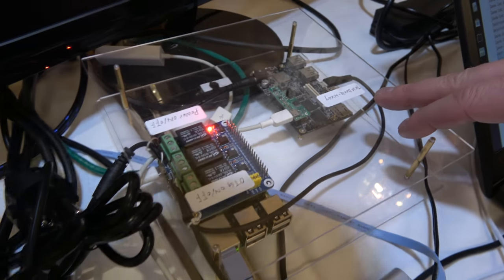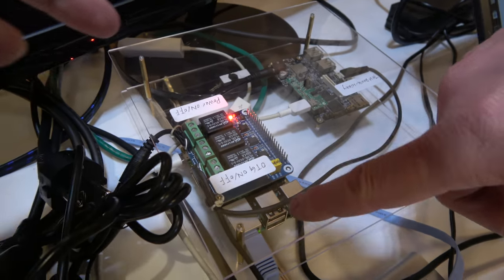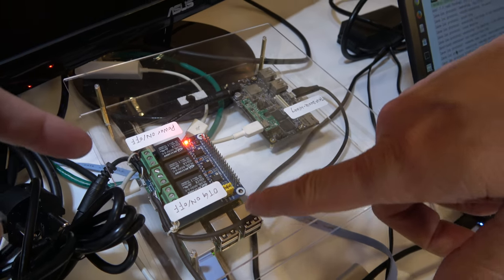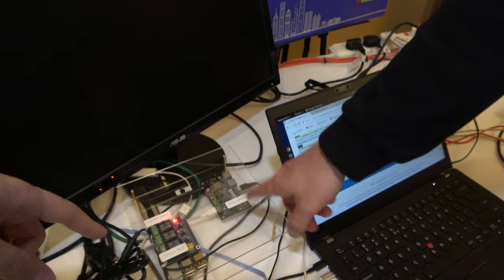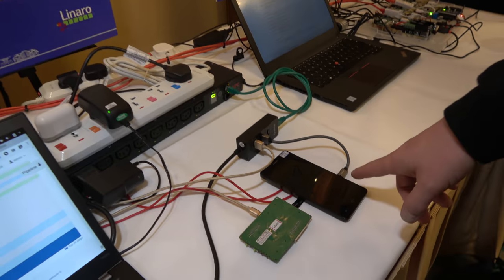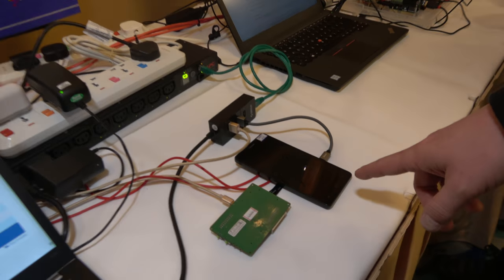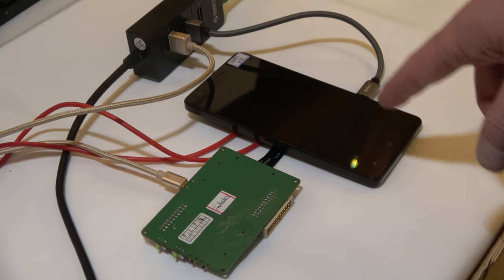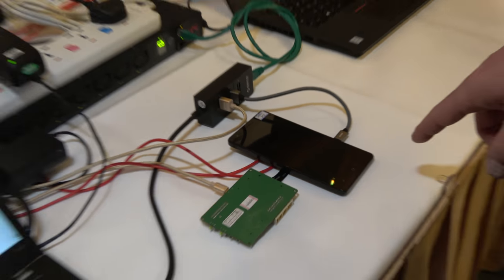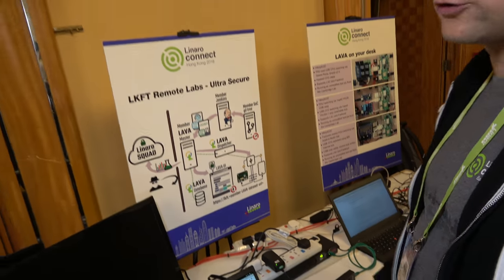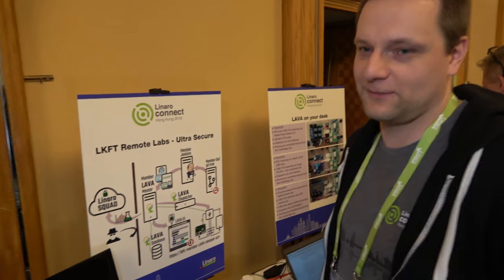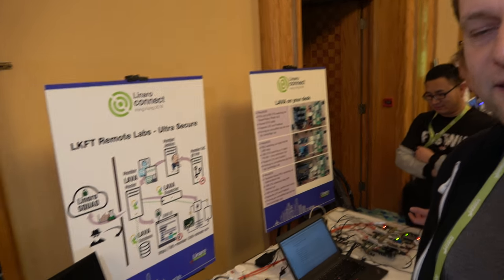This is a 5D board and this bit is just controlling the relay. This one runs OpenEmbedded. This is a phone that we just got — we use it for basic power control so that Lava can synchronize. It's not anything special, just a phone that we got.